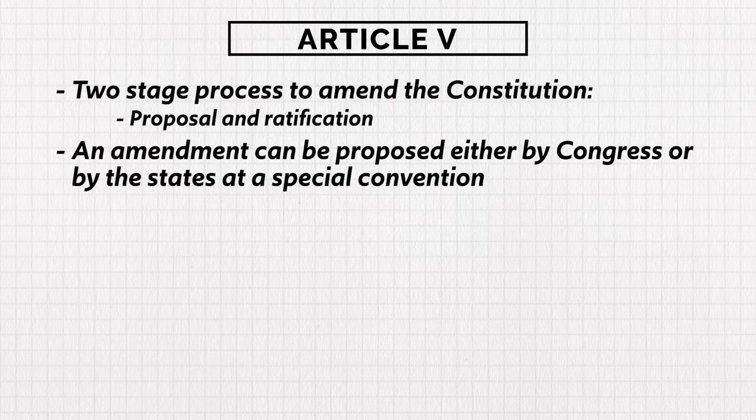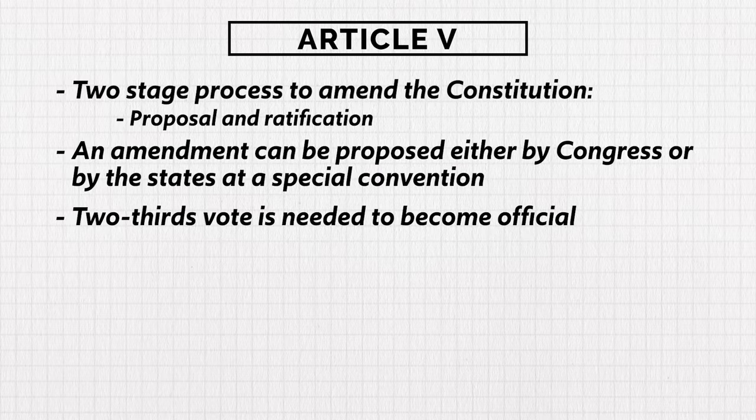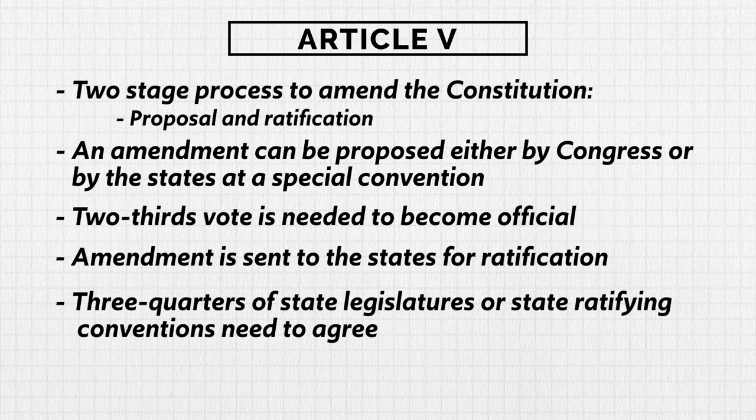An amendment can be proposed either by Congress or by the states at a special convention, and a two-thirds vote is needed for the proposal to become official. Then the amendment is sent to the states for ratification, requiring three-quarters of state legislatures or state ratifying conventions to agree. If they do, the amendment becomes law. Despite all the conflict, the Constitution was ratified in June of 1788 and became the governing document of the United States.